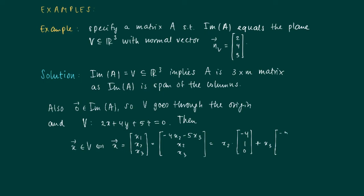So actually, here we have a parametric description of the plane V. And we conclude that actually, what kind of vectors belong to V?